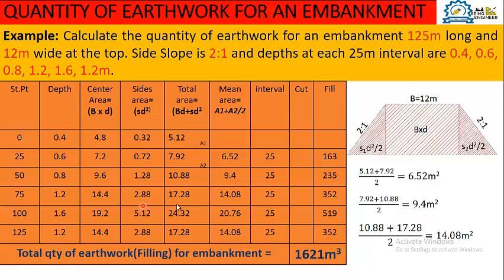Continuing the mean area calculations: 10.88 + 17.28 divided by 2 gives 14.08; 17.28 + 24.32 divided by 2 gives 20.76. We can similarly get 14.08 by adding those two values and dividing by 2. The interval is constant at 25 meters since depths are taken at 25-meter intervals. To get the quantity of fill, we multiply 25 by each mean area value — so 25 × 6.52 gives the quantity for the first interval.